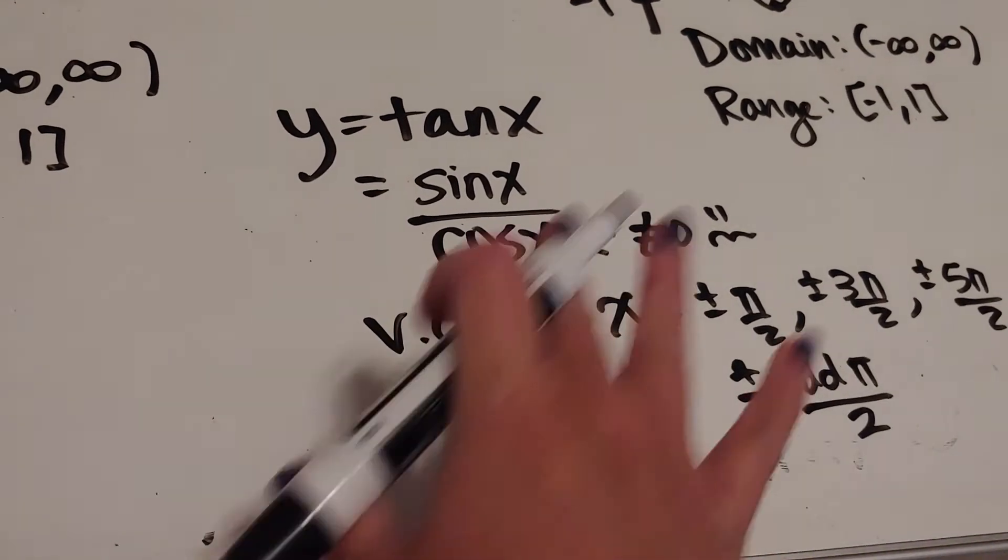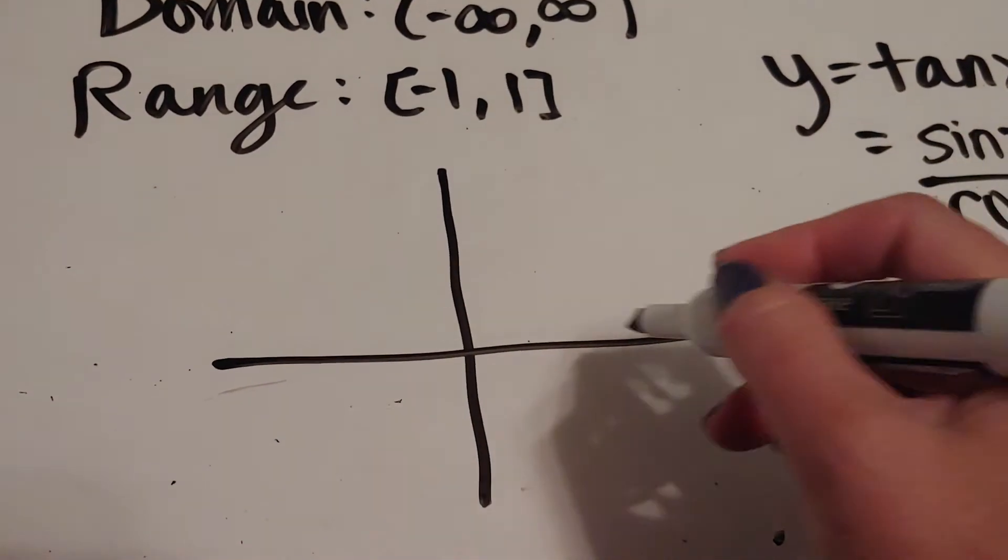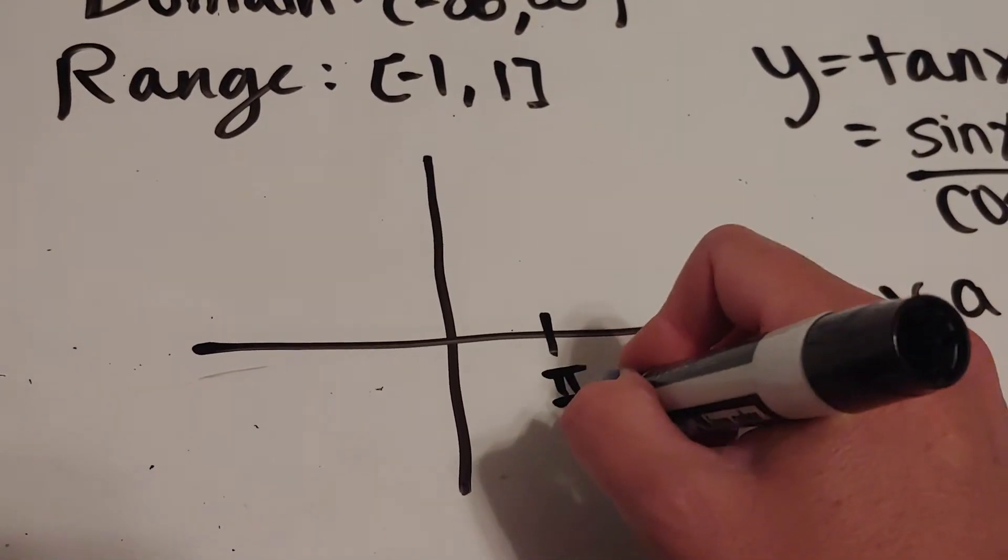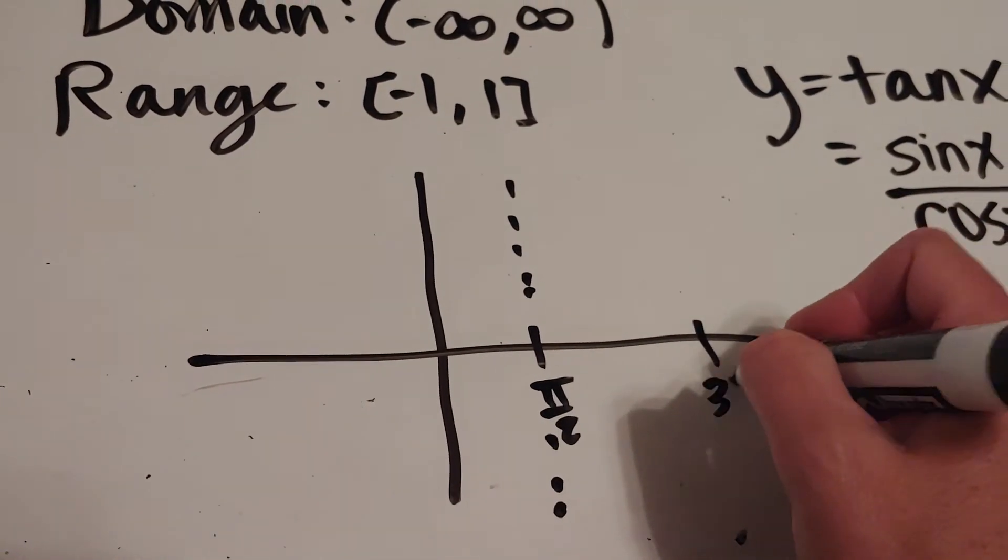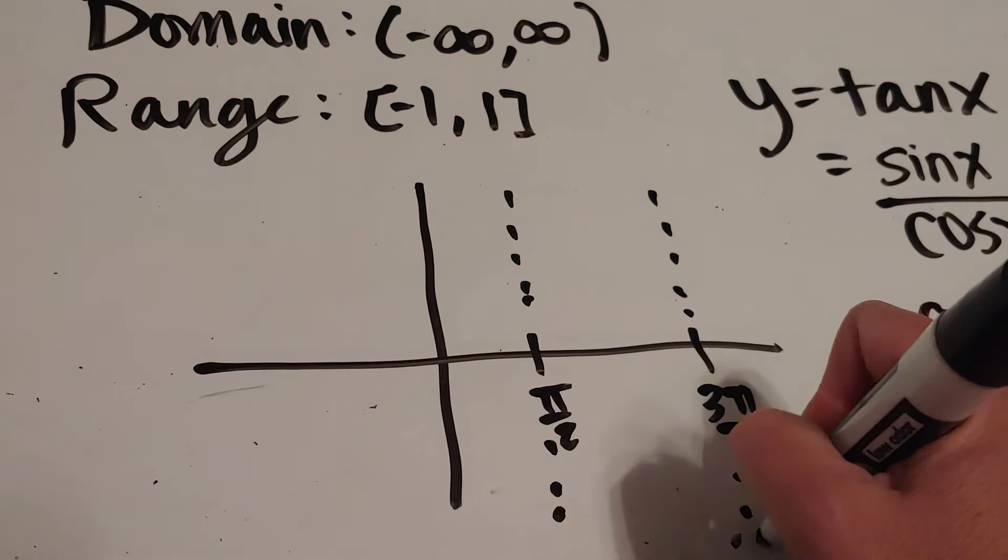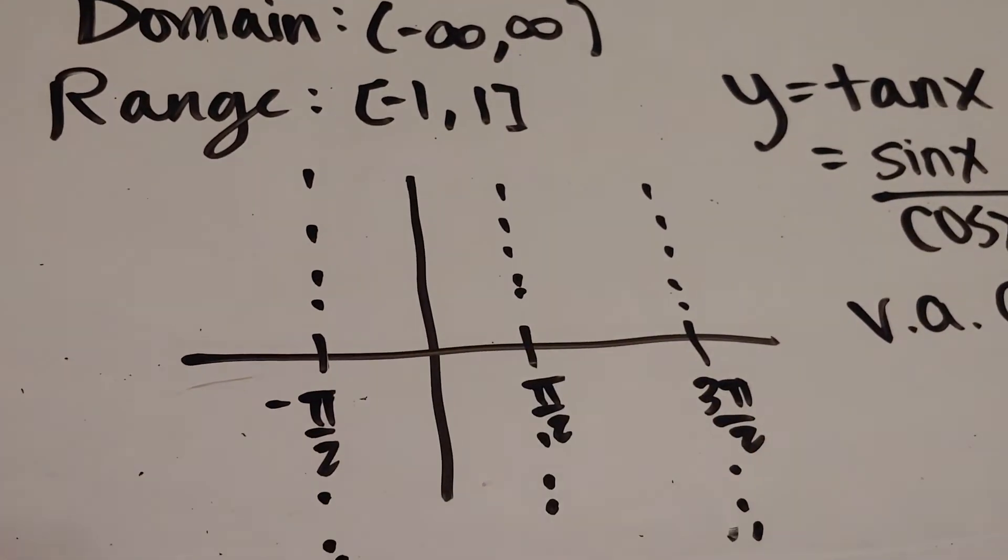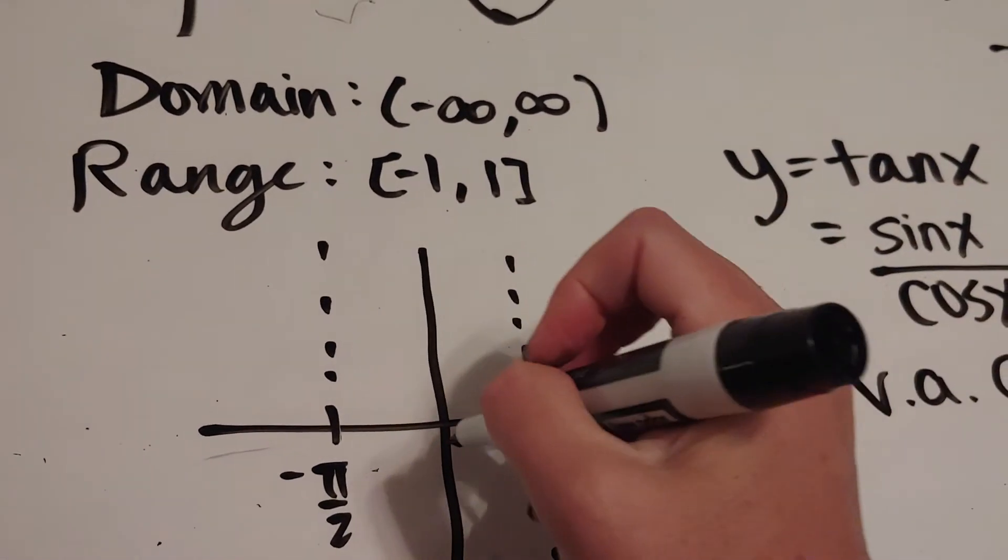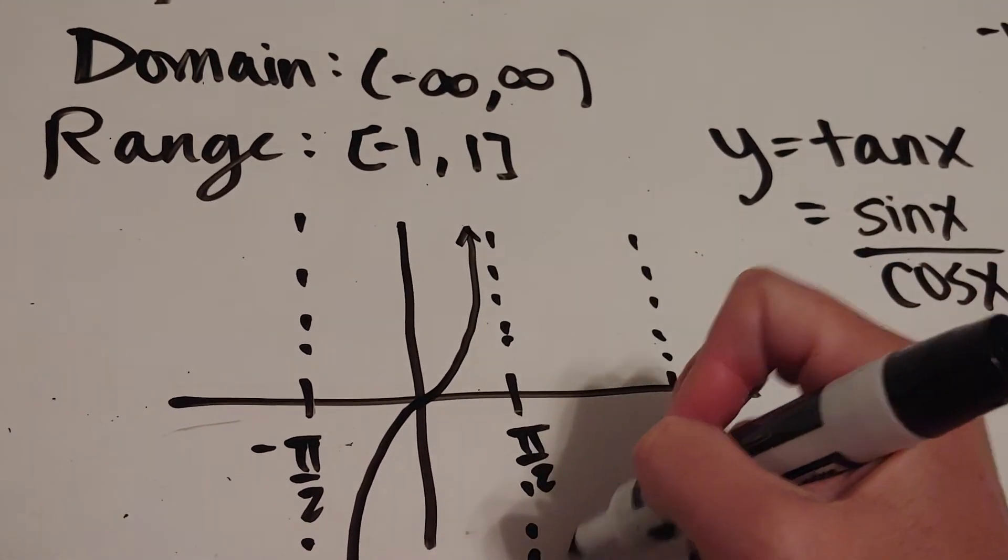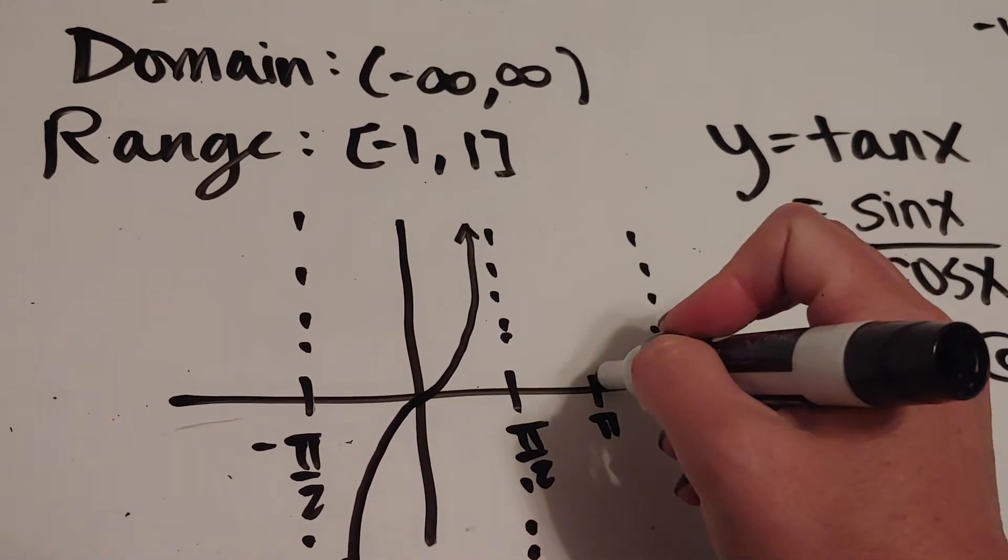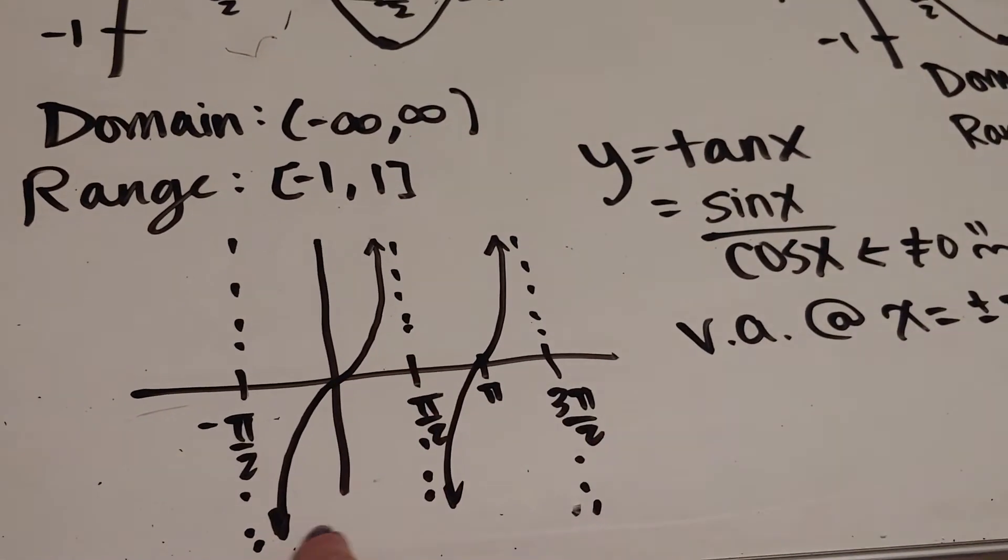When I graph this tangent graph, over here at π/2 we're going to have an asymptote. Over here at 3π/2 we'll have another one. If I go backwards, I'll have one at negative π/2, and it'll just keep going. What it looks like in between actually looks a lot like the cubic graph. So it goes like this. That is the tangent. Over here at π is where it crosses. It just keeps repeating, so its period is actually only π.